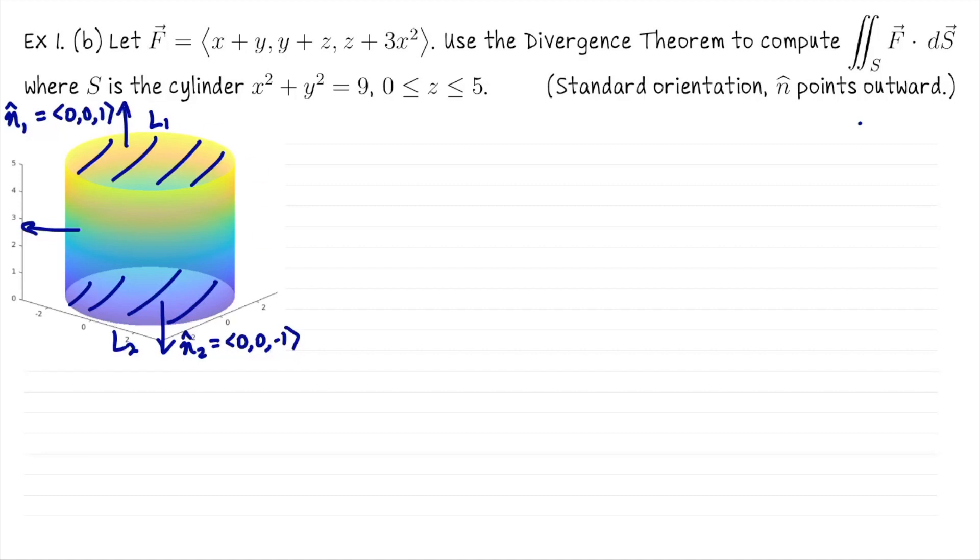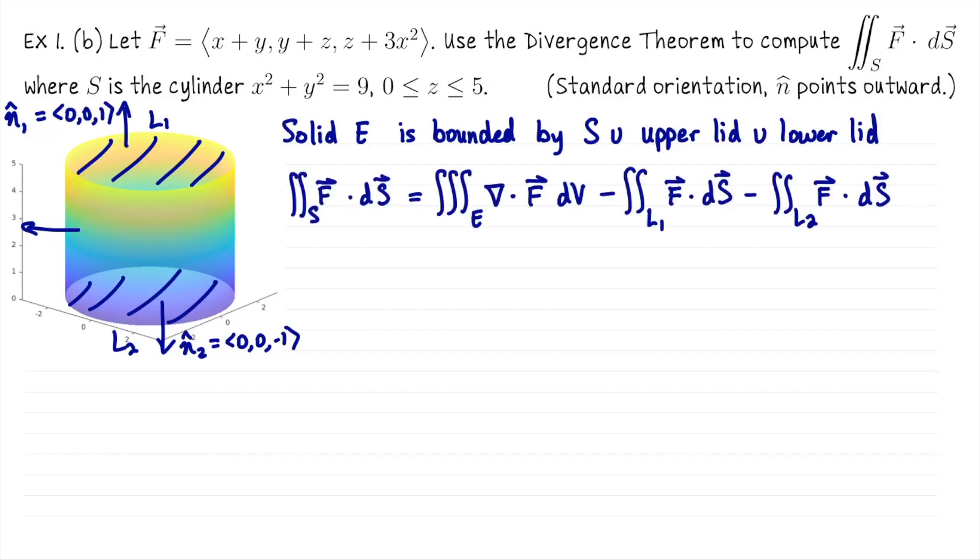Now this solid region we're enclosing, let's call it E. E is being bounded by S, that was our original domain of integration, together with the upper lid and the lower lid. Here I've written the equation we would use to solve for the flux integral of 90π. If I added the two lid terms to the other side, we would be saying the divergence of F across E equals the flux across S plus the flux across L1 plus the flux across L2. But we were just trying to compute the flux across S, so let's isolate that.